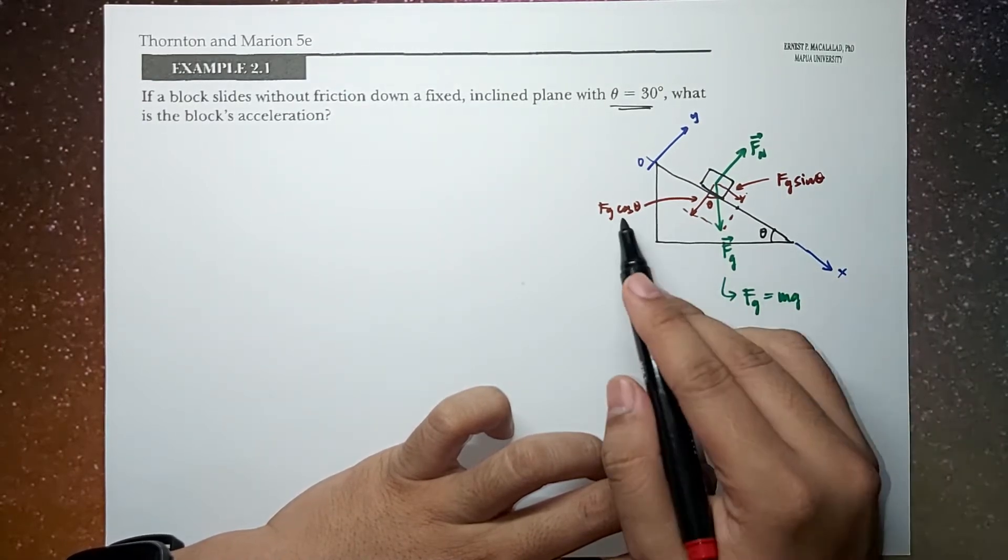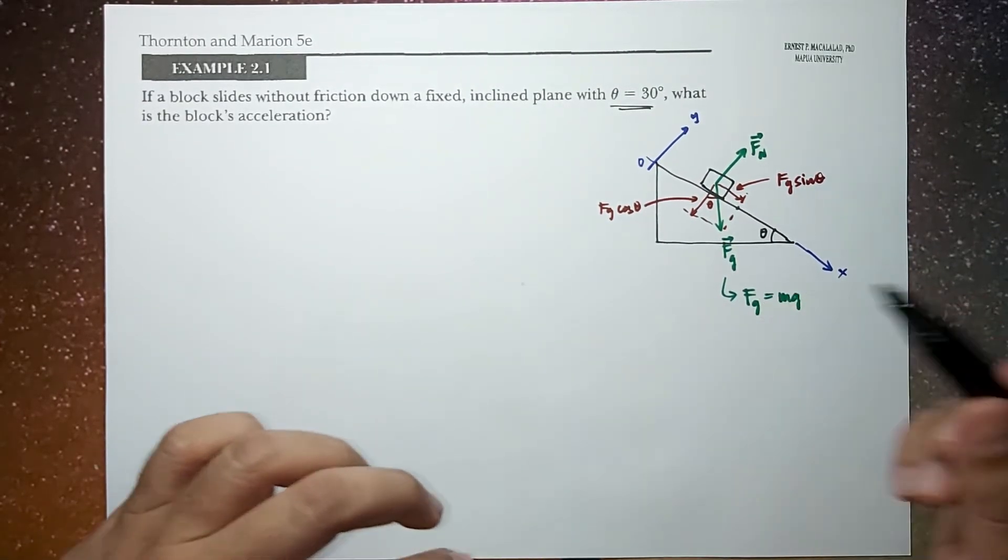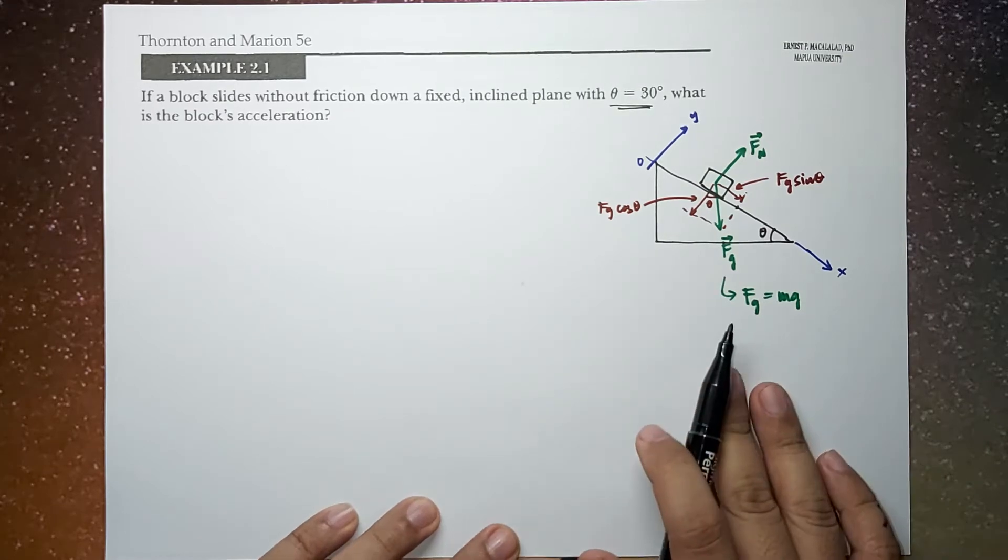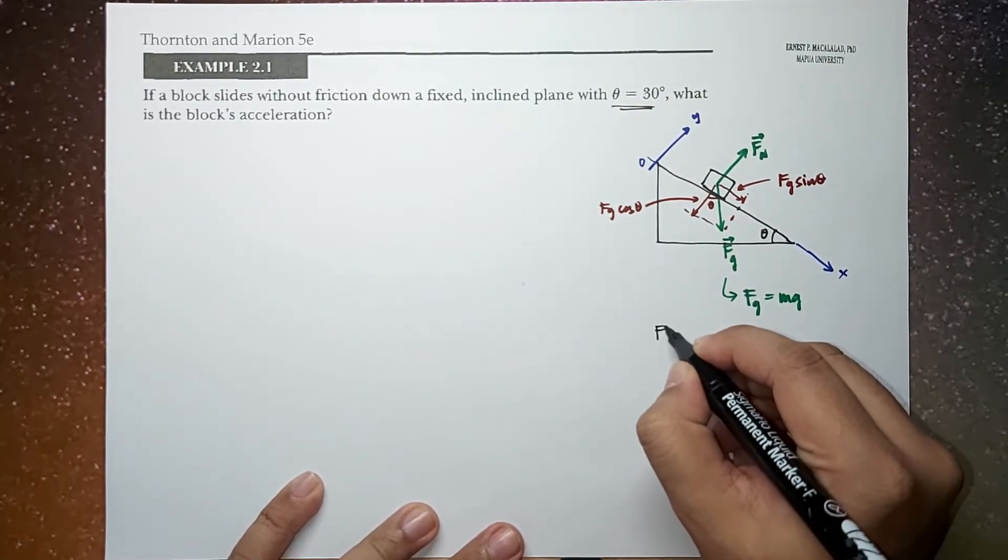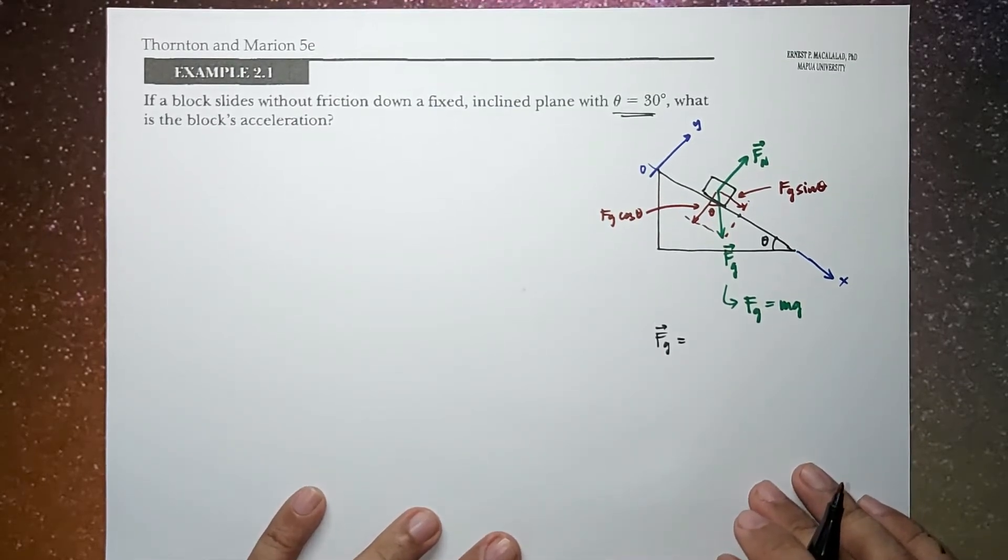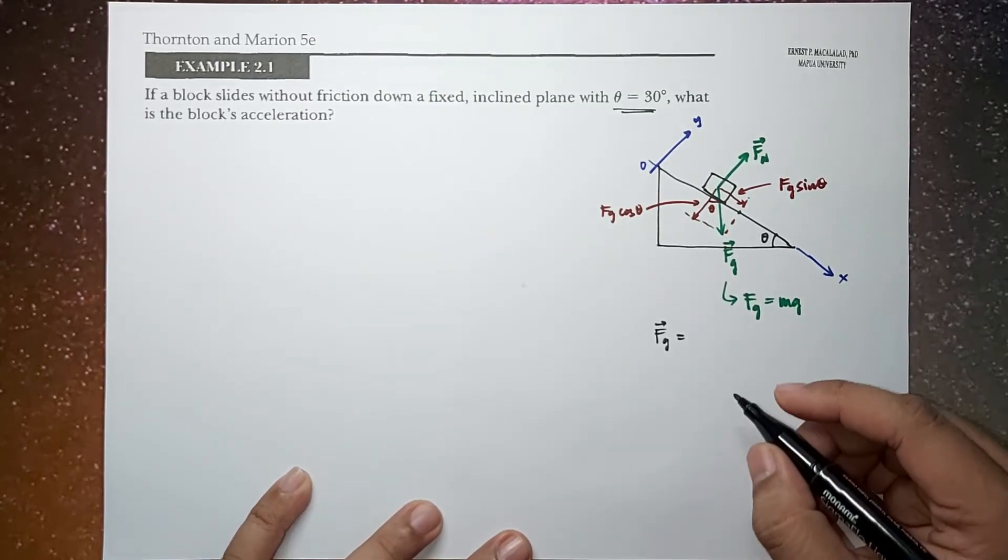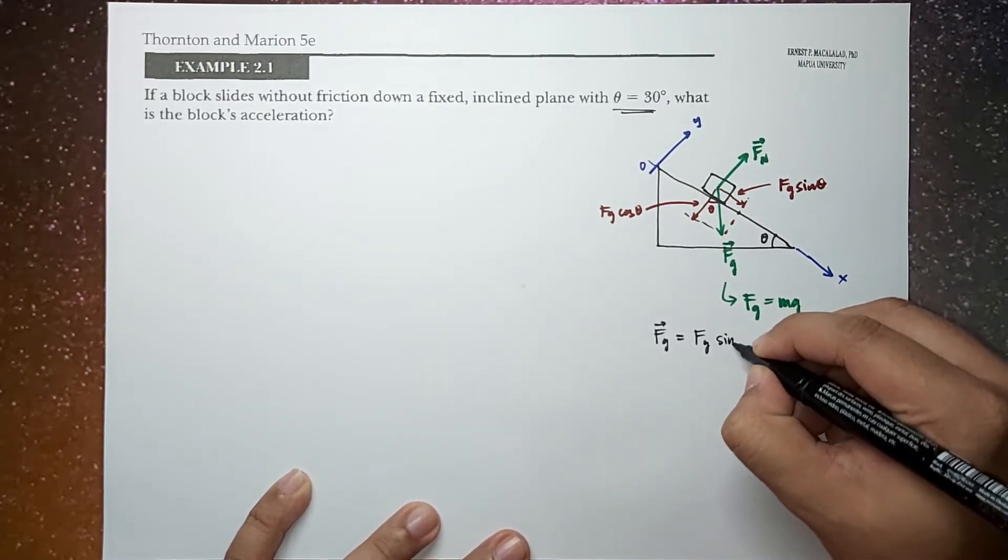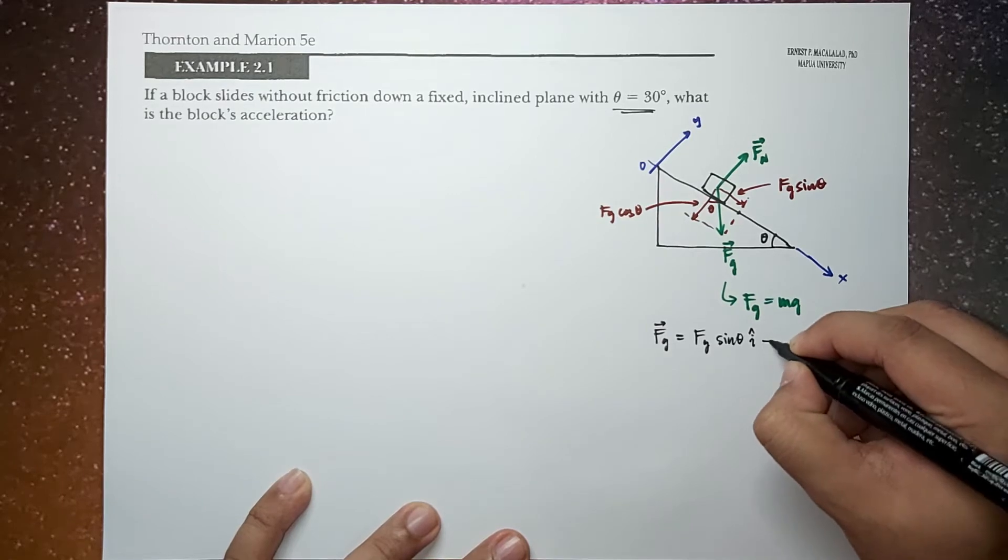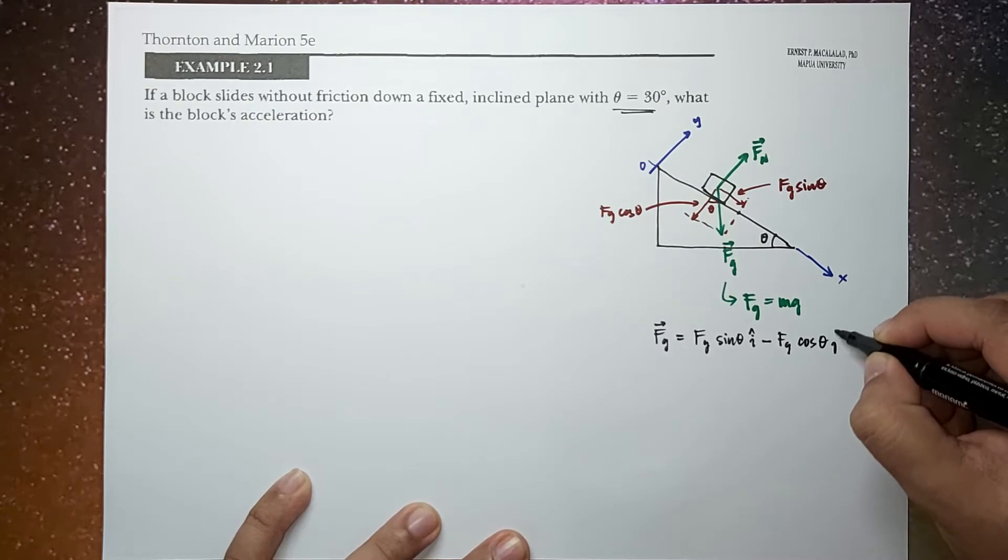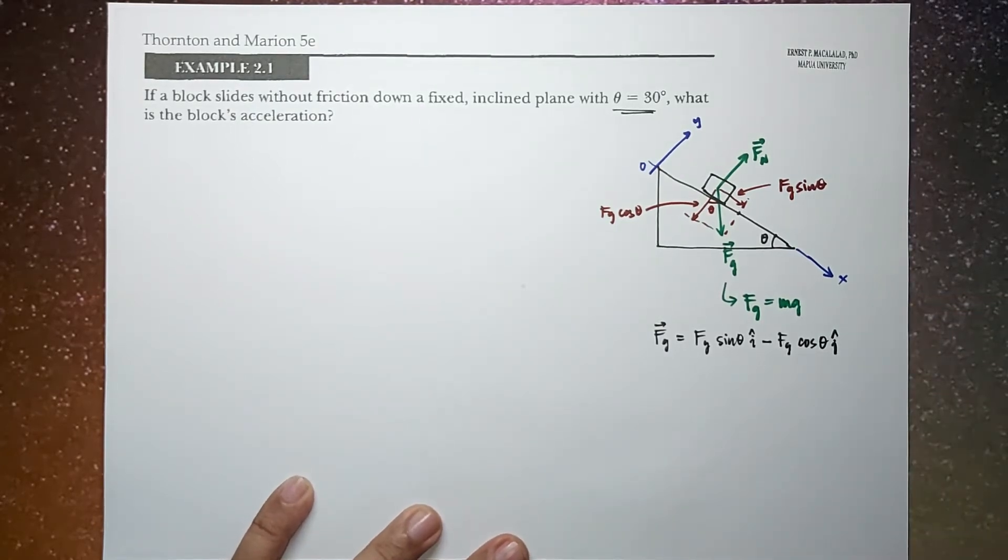Okay, again, we are looking at the magnitude. We're going to talk about the components later. So here we have the gravitational force Fg represented in unit vector notation as Fg sin theta i hat minus Fg cosine theta j hat.